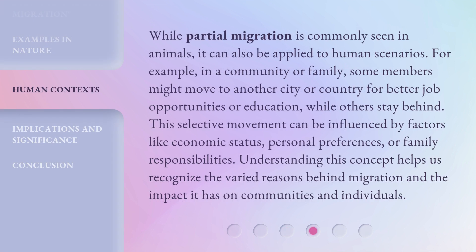While partial migration is commonly seen in animals, it can also be applied to human scenarios. For example, in a community or family, some members might move to another city or country for better job opportunities or education, while others stay behind. This selective movement can be influenced by factors like economic status, personal preferences, or family responsibilities. Understanding this concept helps us recognize the varied reasons behind migration and the impact it has on communities and individuals.